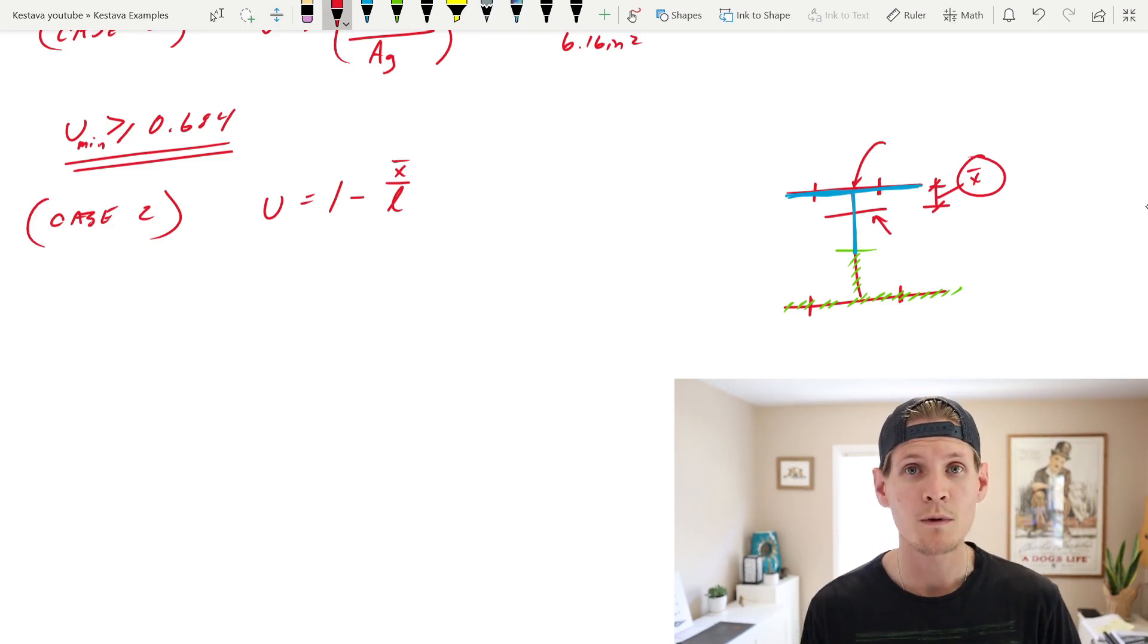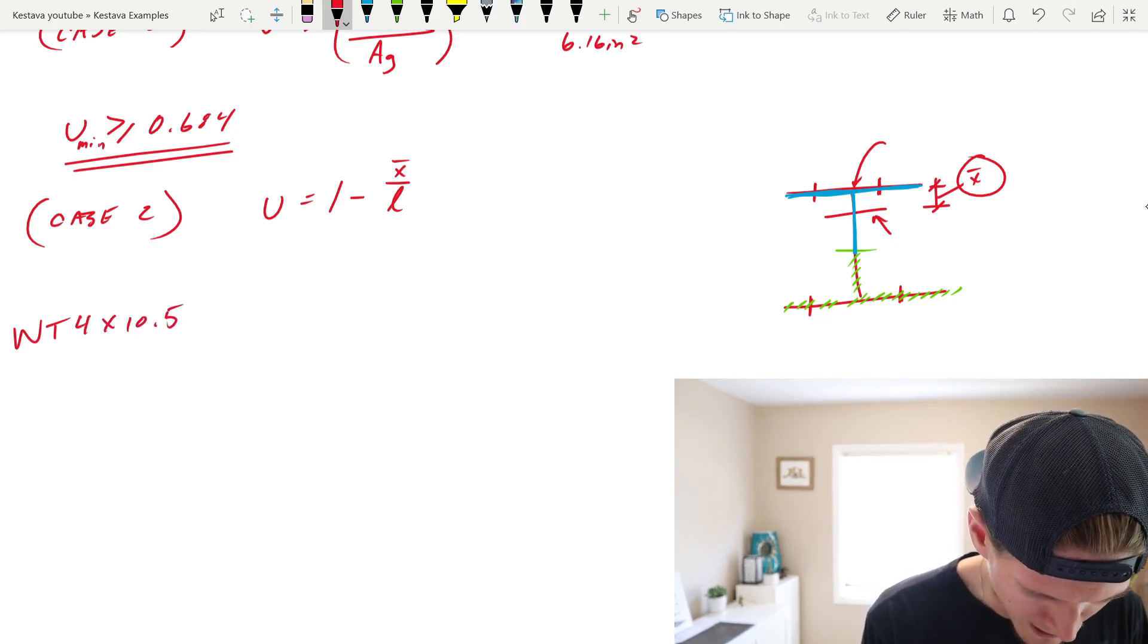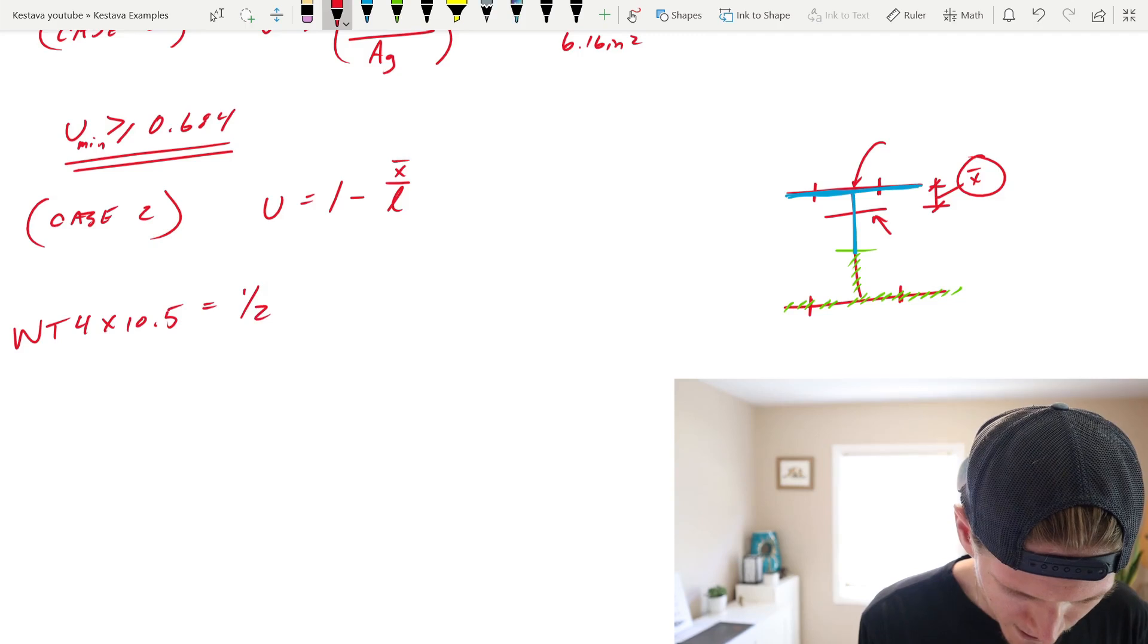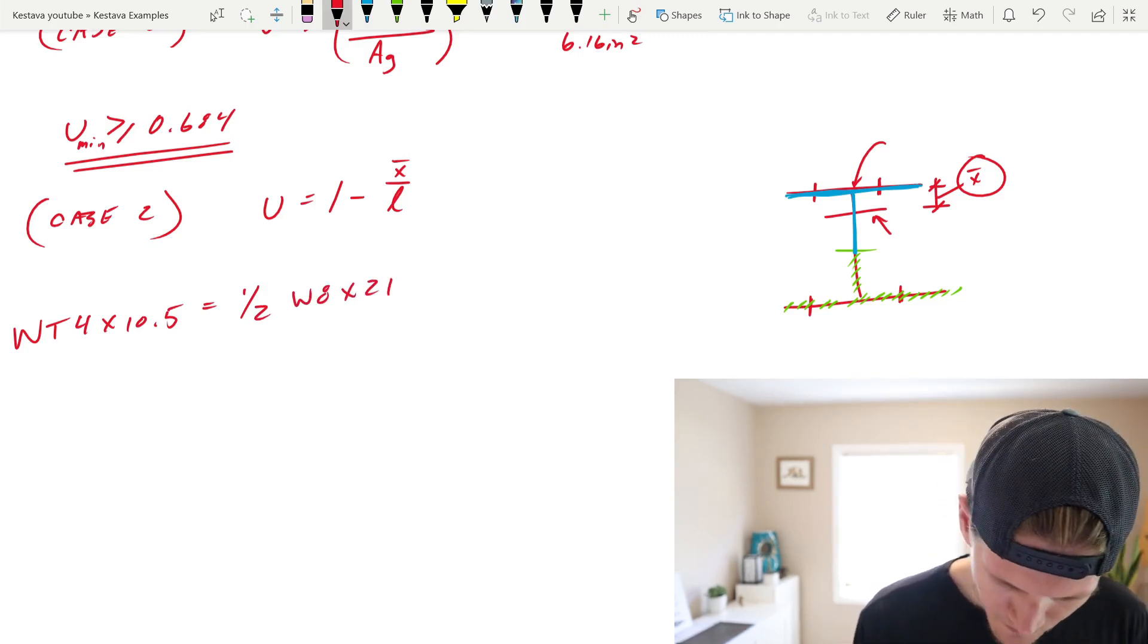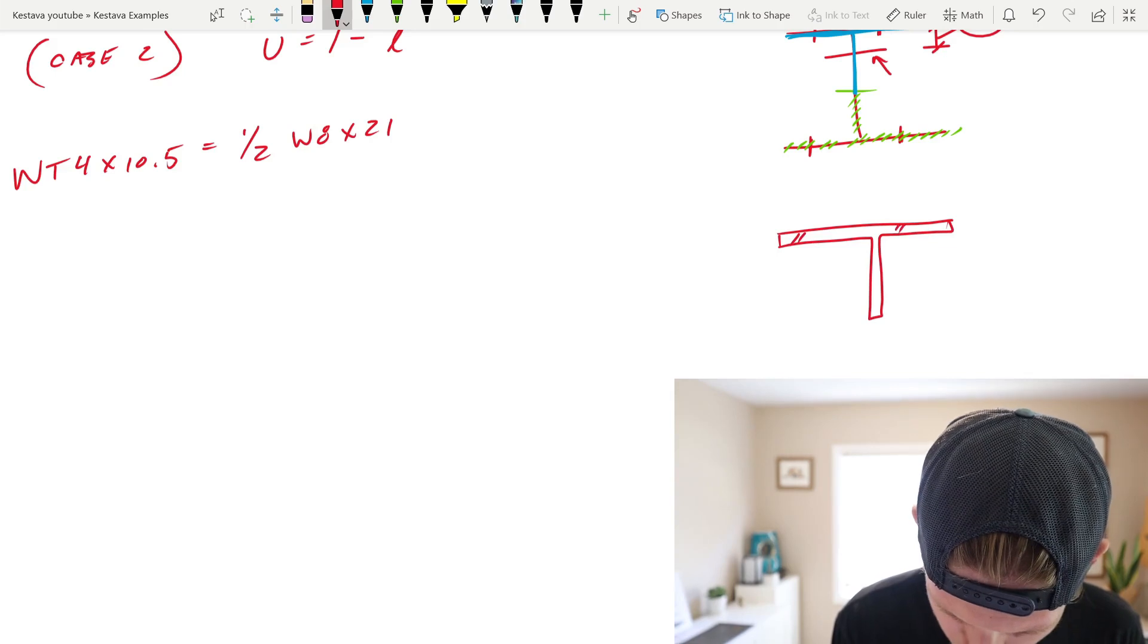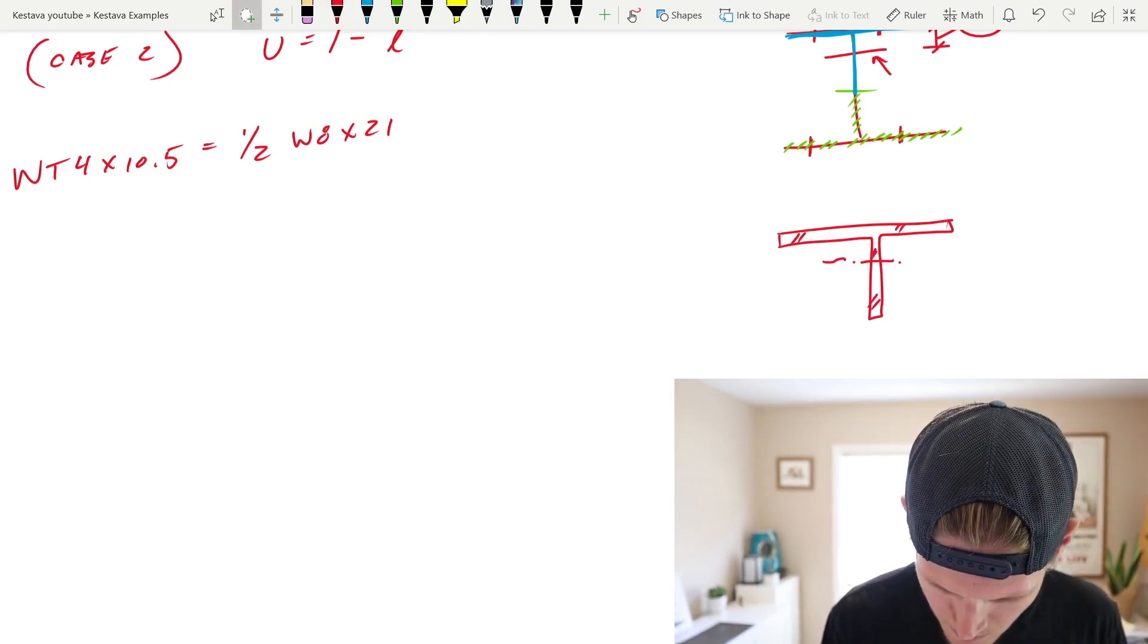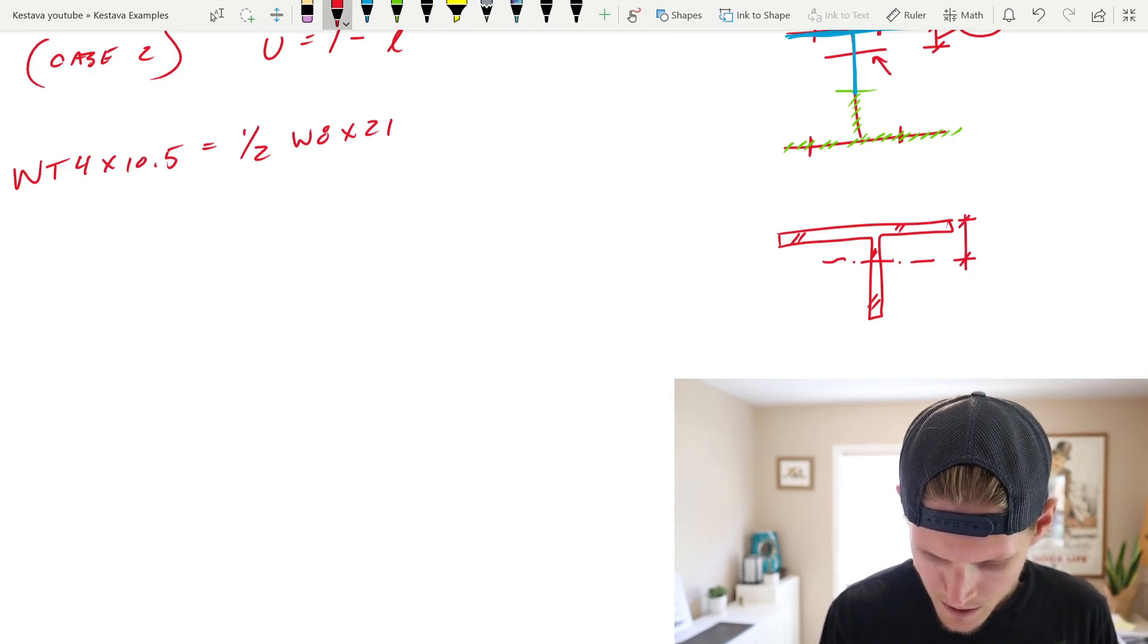Now, you need to find what this distance X bar is. And you're like, well, how do I do that? Well, what we're going to do is go back to the front, to table 1-1 and figure out what WT section is half of a W8 by 21 wide flange section. That happens to be, save you a little time, WT 4 by 10.5 is one half of a W8 by 21. And what you'll see again, keep scrolling down,